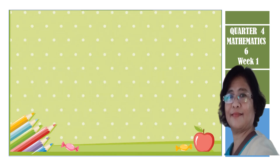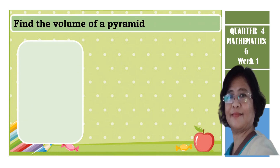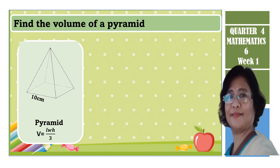Let us find out the volume of the pyramid. We know that the volume of a pyramid is one-third of the volume of the prism. The formula to find the volume of a pyramid is: Volume = length × width × height ÷ 3. The pyramid has a length of 10 cm, a width of 8 cm, and a height of 20 cm.